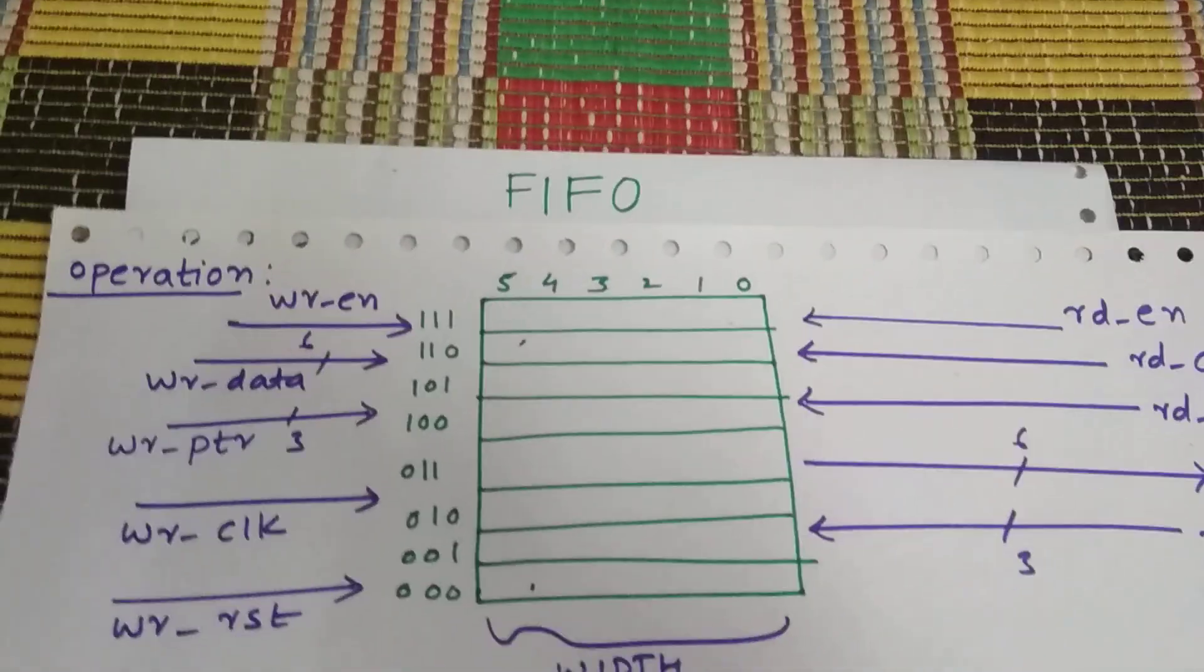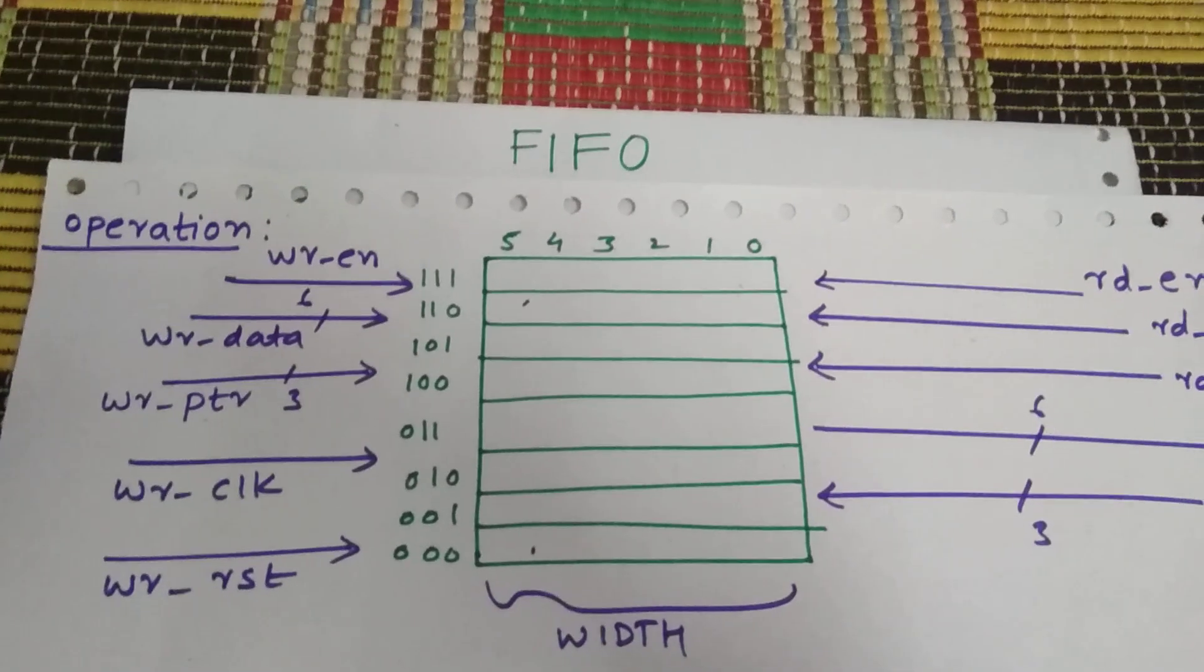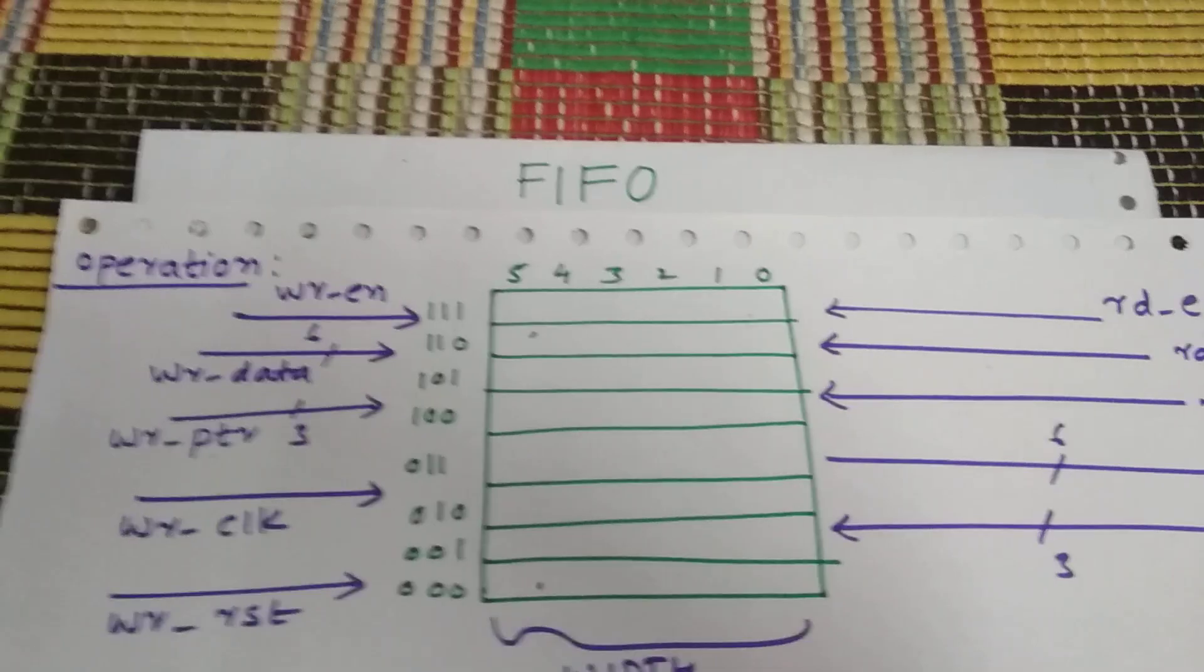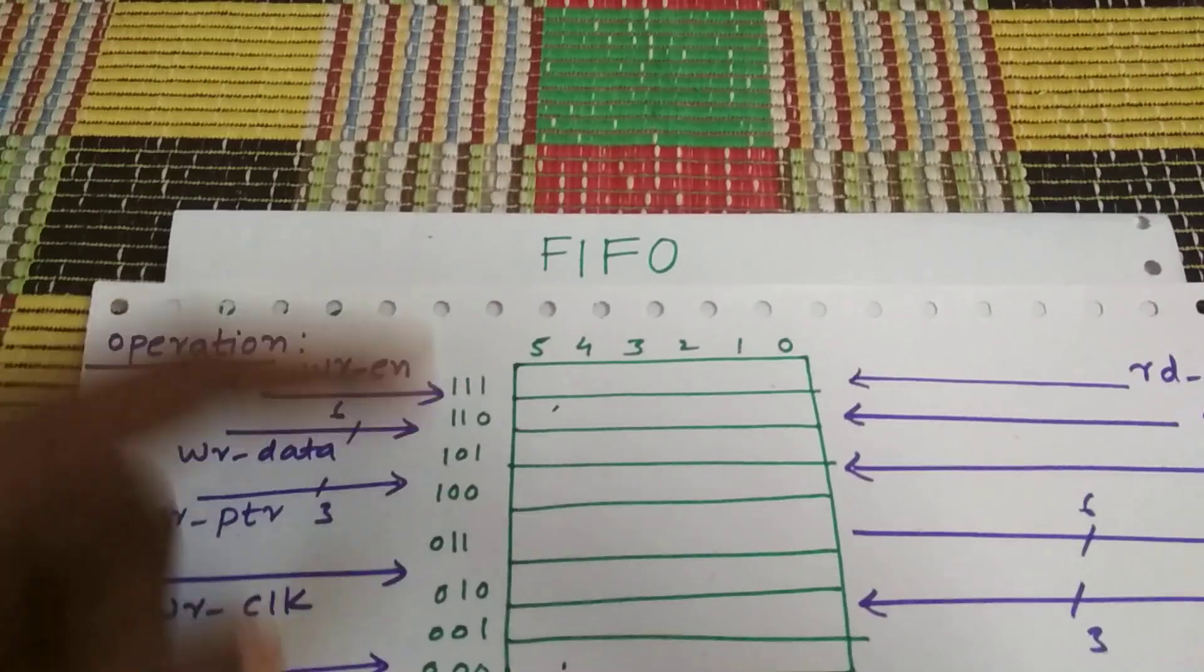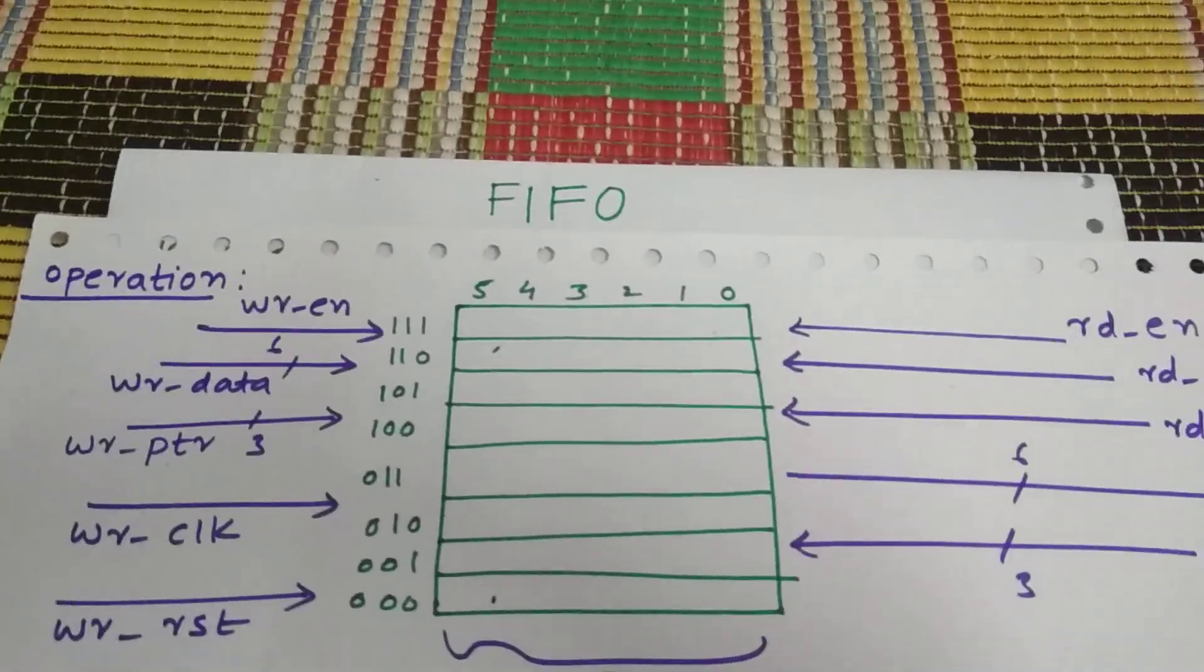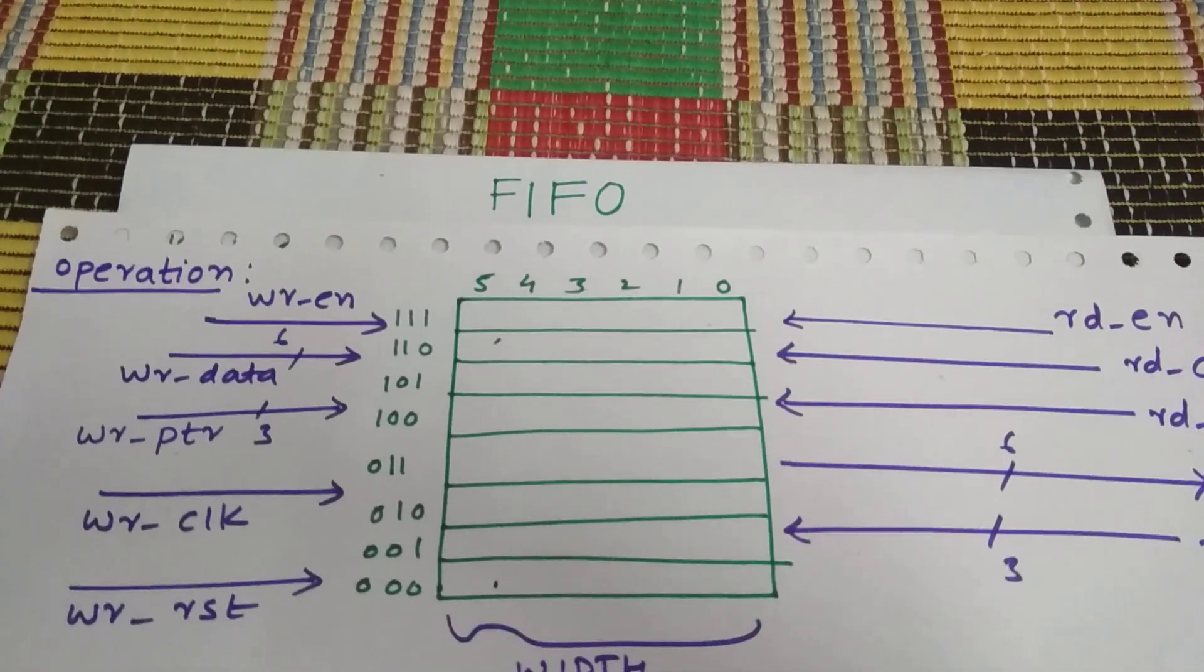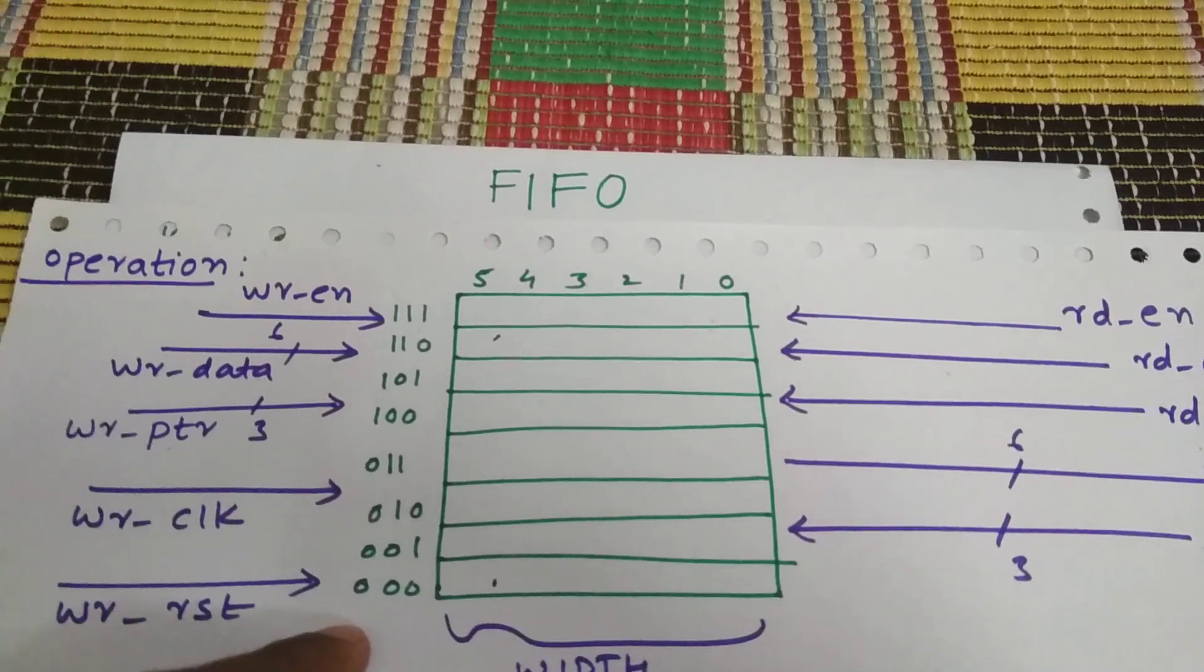So this is how a FIFO looks. It has a depth and width. So here I'll consider an example of 0 to 8 as a depth and the width is 0 to 6, so 6 bits of width and 8 bits of depth.